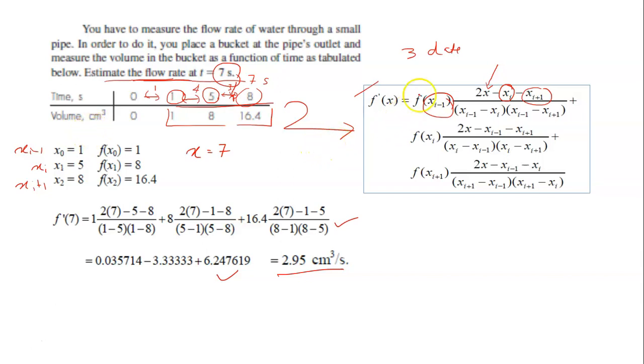And then the next part is you need to identify the equation. Which equation that you should use to solve this kind of question? Once you've got your formula, it's all about identifying which is which. Meaning, what is my xi? What is my xi plus 1? What is my xi minus 1? And what is my x? Once you've got that, it's just a matter of plug in into the equation and solve, and you get your answer.